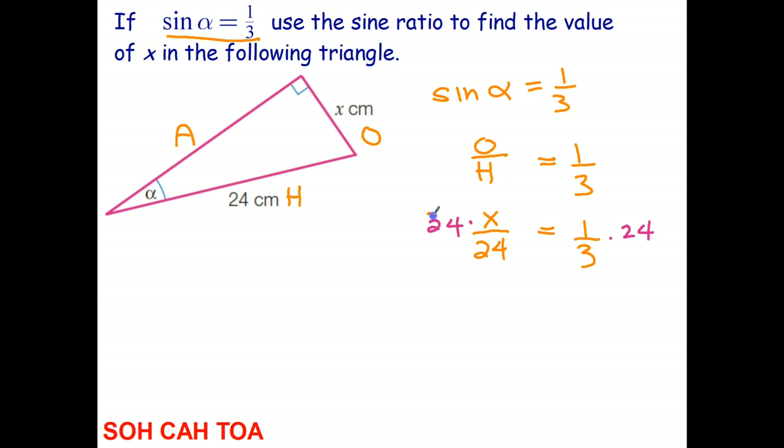And I multiply by 24. And the reason for that, of course, is these two 24s divide out. And X is equal to one-third times 24.